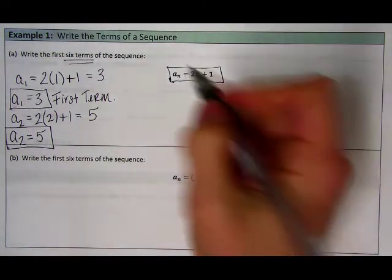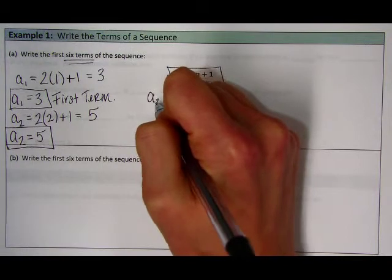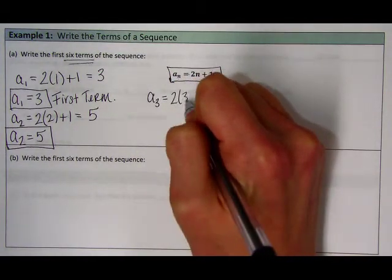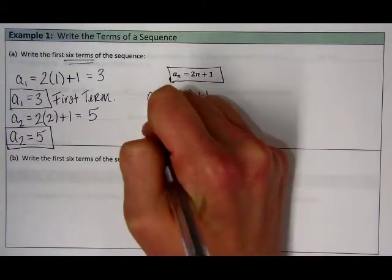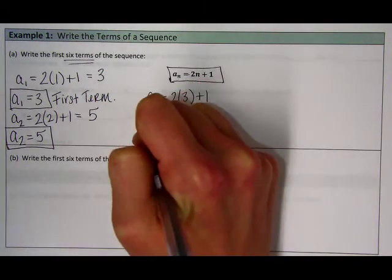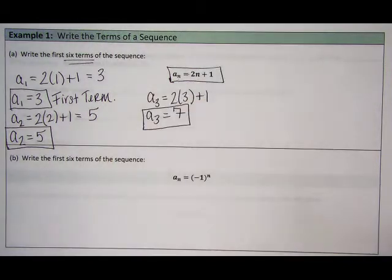Moving on to the next one, a sub 3 is my third term. I'm plugging 3 in, so I get 2 times 3 plus 1. So a sub 3 is 6 plus 1, which gives me 7. So my third term is 7.